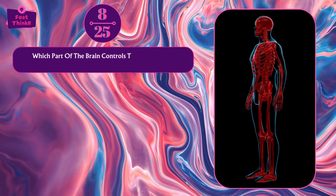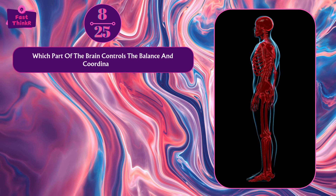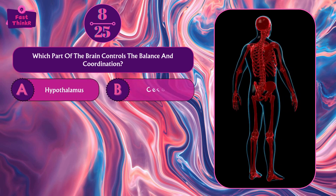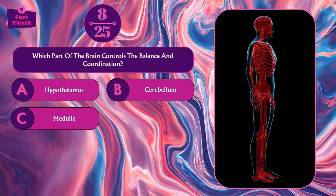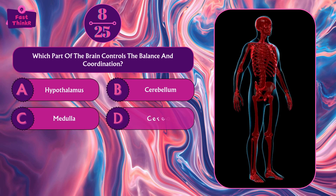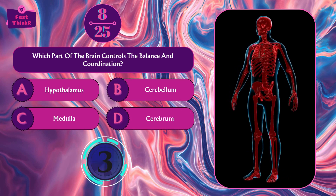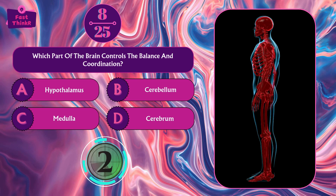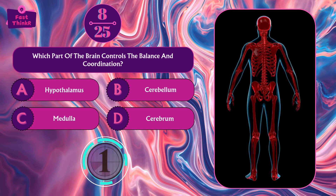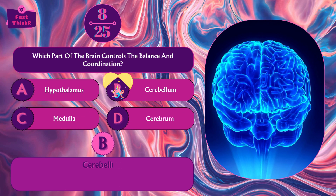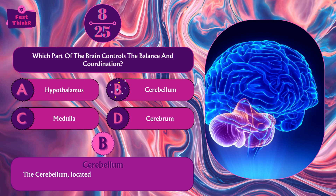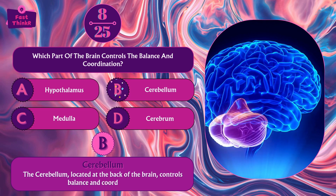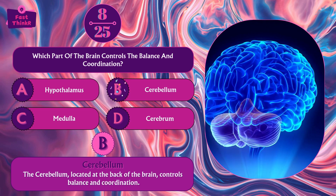Which part of the brain controls balance and coordination? Hypothalamus, cerebellum, medulla, or cerebrum? Option B — cerebellum. The cerebellum, located at the back of the brain, controls balance and coordination.